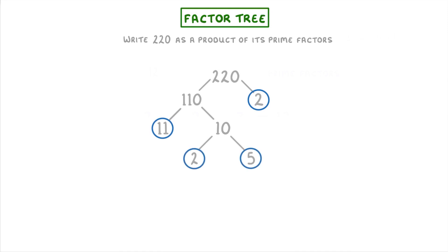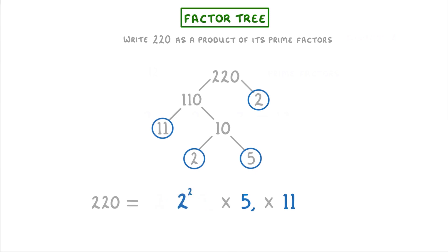Now that we've finished factorising it, we can write out all our prime factors: 2, 2, 5, and 11. It's normally best to put them in ascending order, which just means from smallest to biggest. So we found that 220 equals 2 times 2 times 5 times 11. And as 2 occurs twice, we should rewrite it as 2 squared times 5 times 11.